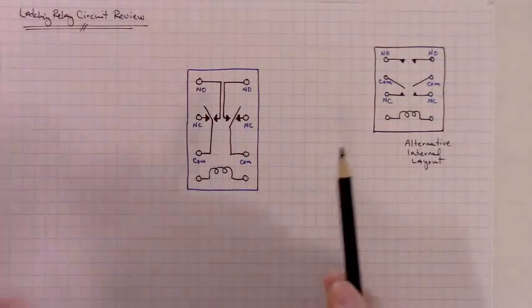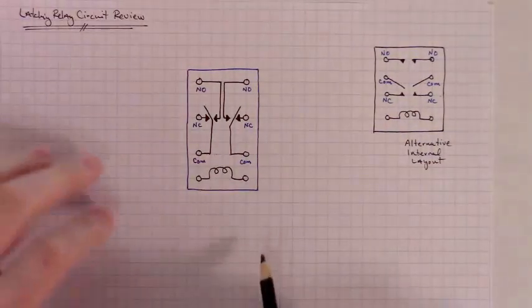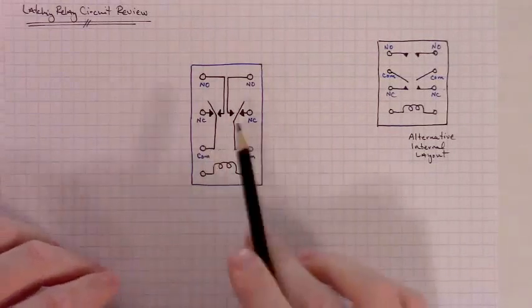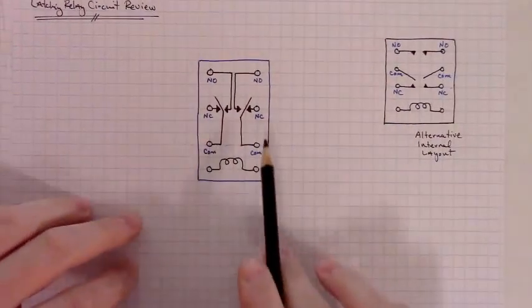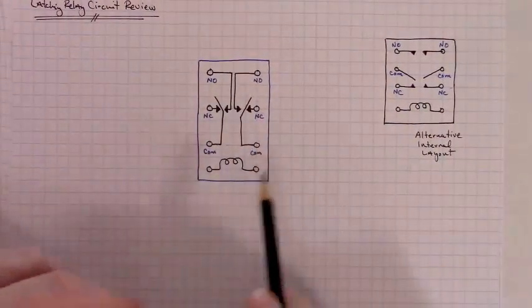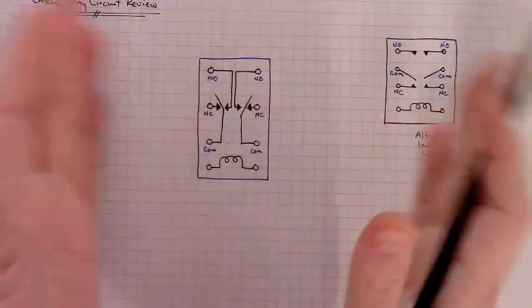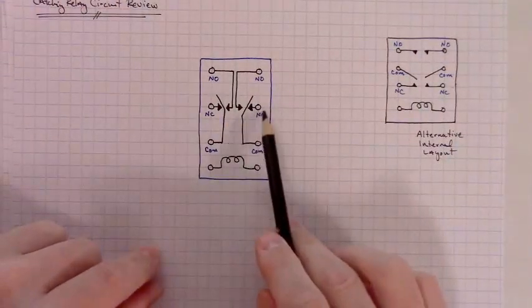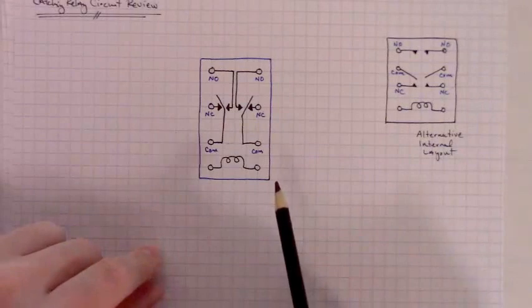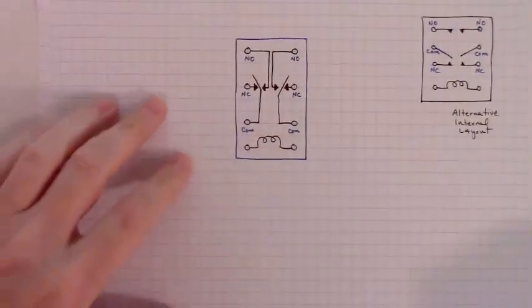Just pay attention to your internal layout and you should still be able to build a latching relay circuit. As long as you are familiar with the idea of a latching relay circuit, you can normally build one regardless of the internal layout. You just have to figure out which pins are connected to the flippers and which pins are connected to the normally closed and the normally open contacts. In this case, with our relay, the first thing we need to do is connect one side of the coil to our power supply.